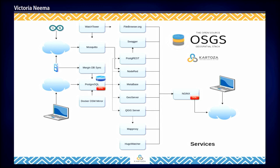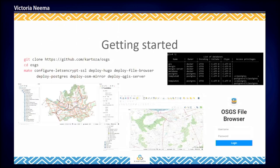Going back to our map-making process, this is what it looks like based on the OSGS platform. We can pull OSM data for an area of interest using the Docker OSM service. The data is stored in a Postgres database using the Postgres service. We've got QGIS Desktop to make our map, and the file browser and QGIS Server services to publish our map. Finally, a static website using the Hugo service where we can post articles about our map. Getting all these services up is as simple as running the commands on screen in your terminal, which will deploy the services you need so you can get started making your map easily and painlessly.